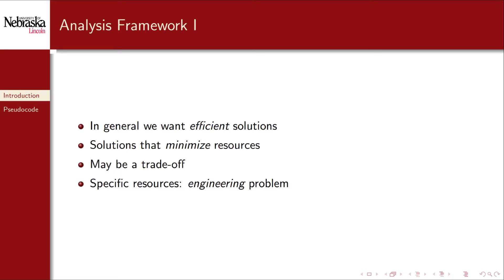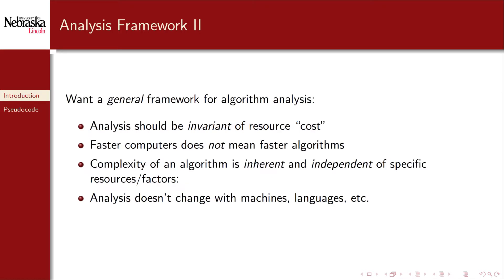Given an algorithm we want to know what its inherent complexity is. For this reason we want a general and abstract framework for algorithm analysis. This analysis needs to be invariant and independent of any particular resource costs. Just because computers become faster and cheaper doesn't mean that the algorithms that we run on them suddenly become magically more efficient. Faster computers means that we can execute an algorithm faster on the same input or that the same amount of time on larger inputs. We don't want our theoretical analysis to be tied to any particular resource because those resources can change. Algorithms don't.